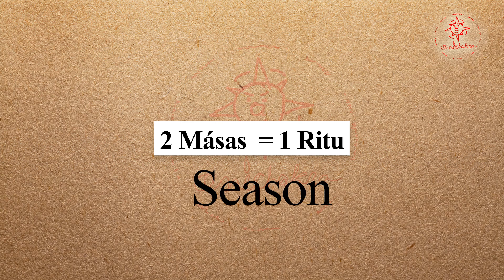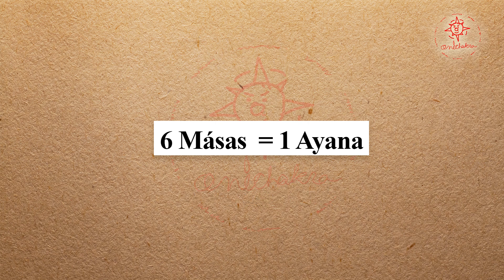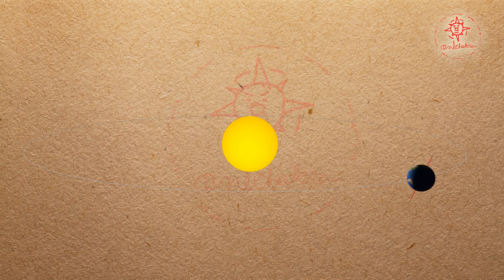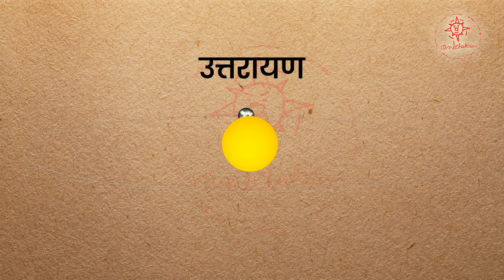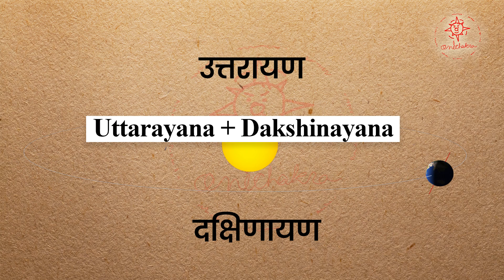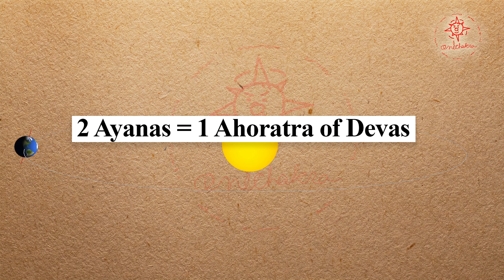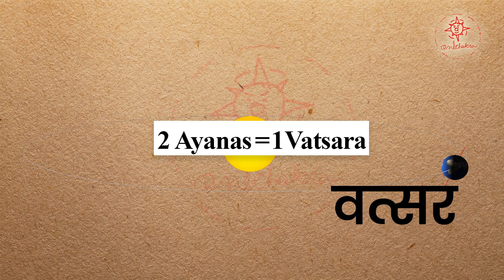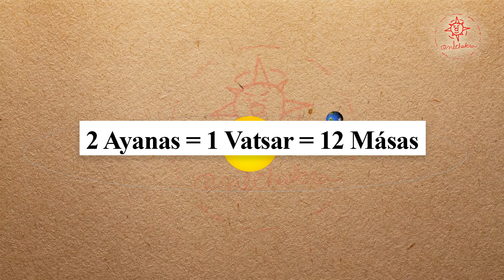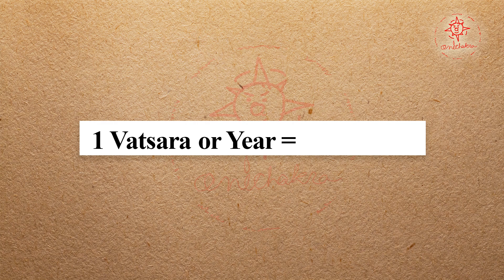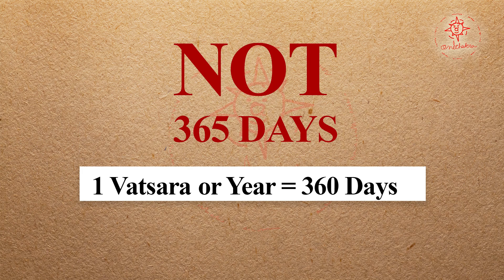Two months taken together make a Ritu or season. An Ayana consists of six months, and Ayana is southerly and northerly by turns as the Sun takes its course — we call it Uttarayan and Dakshinayan. The two Ayanas constitute an Ahoratra of the gods in heaven. These are known as one Vatsar or year, which is 12 months on earth. In the ancient Indian concept, a year is 360 days, not 365.